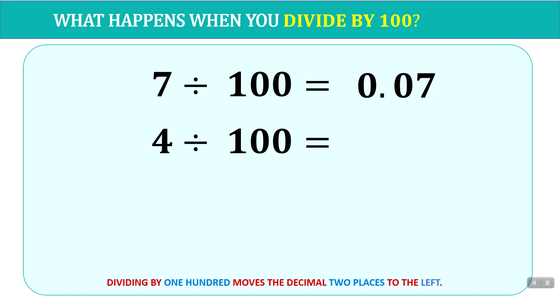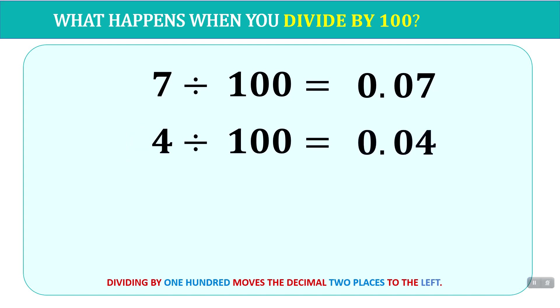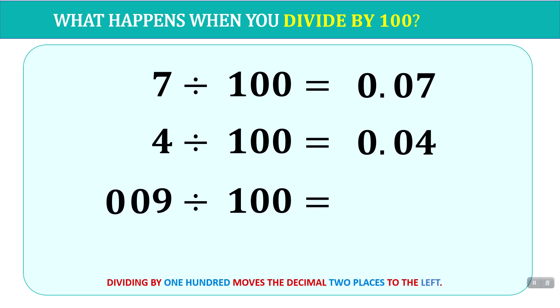If we look at 4 divided by 100, all we have to do is take the 4, place a few zeros behind it, and move the decimal point once, twice — and we see that gives us 0.04. 9 divided by 100 just means moving the decimal place 2 places to the left. We put zeros to hold the place — once, twice — and that's 0.09.